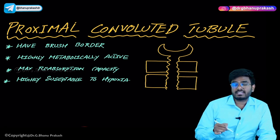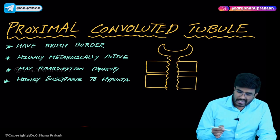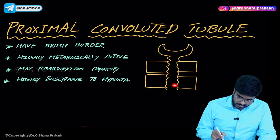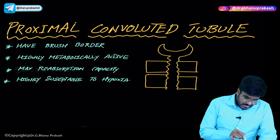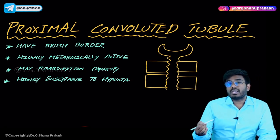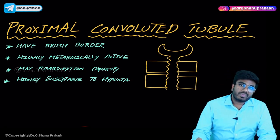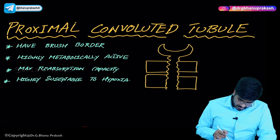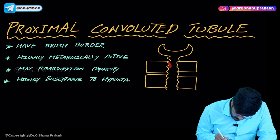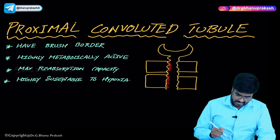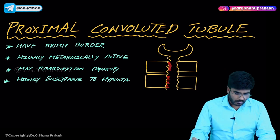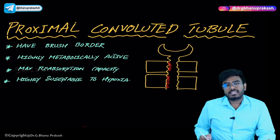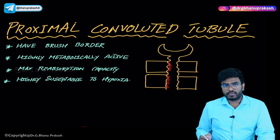This crescentic-shaped structure is the Bowman's capsule. The first part of the nephron is the proximal convoluted tubule. Now, an important feature of the PCT is that it has a brush border — the epithelium lining the PCT has microvilli projecting toward the lumen, which increases the surface area. More surface area means substances can be reabsorbed more easily. So a direct MCQ: which part of the nephron has a brush border? It's the PCT.